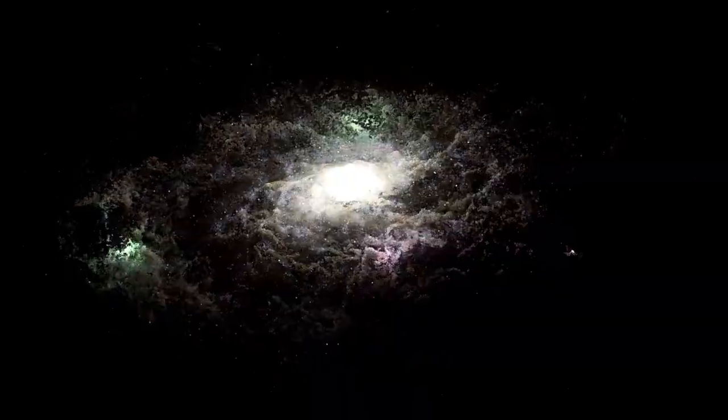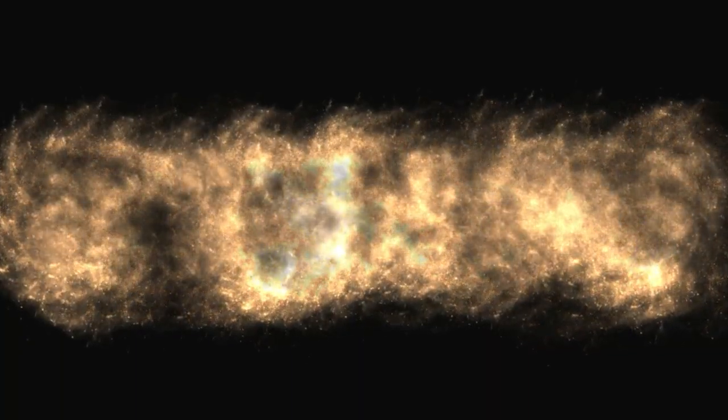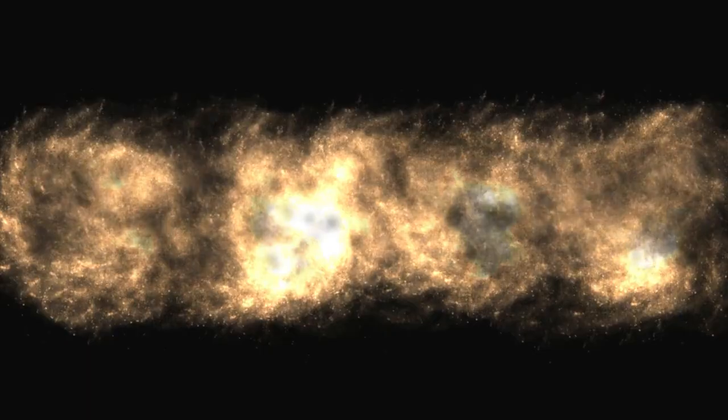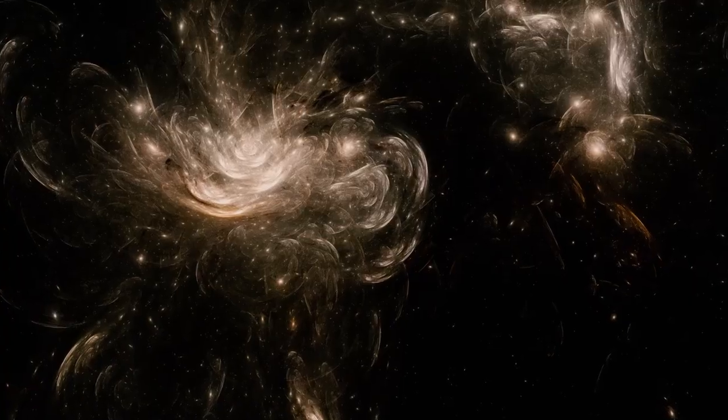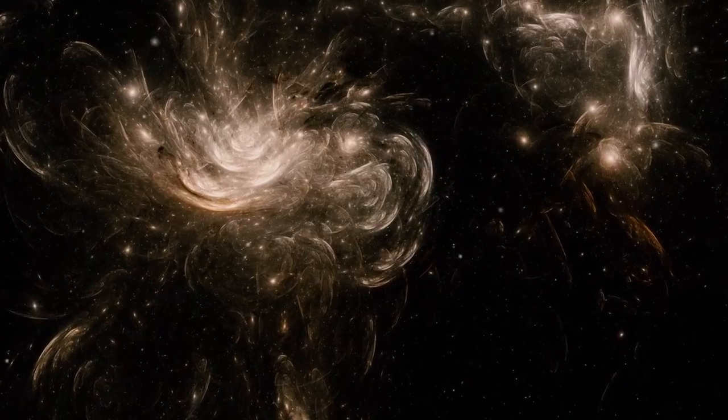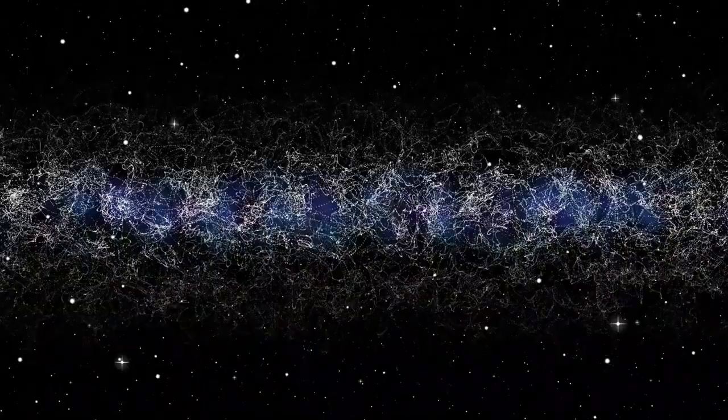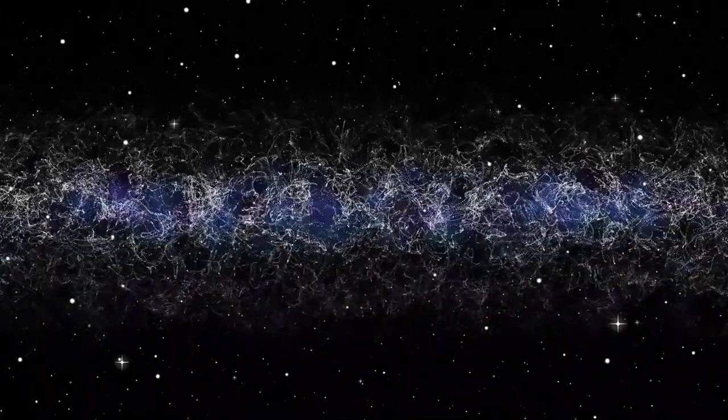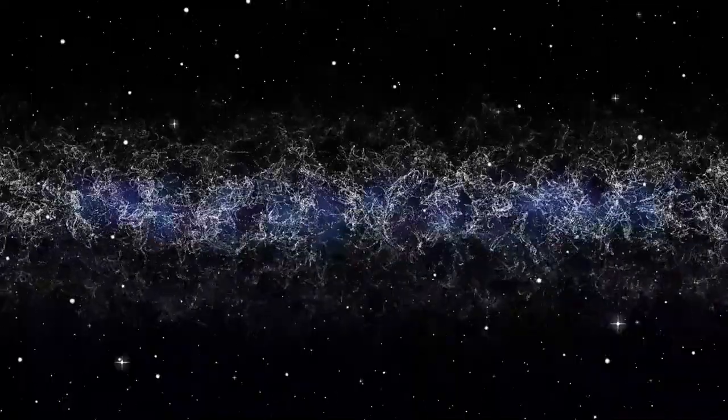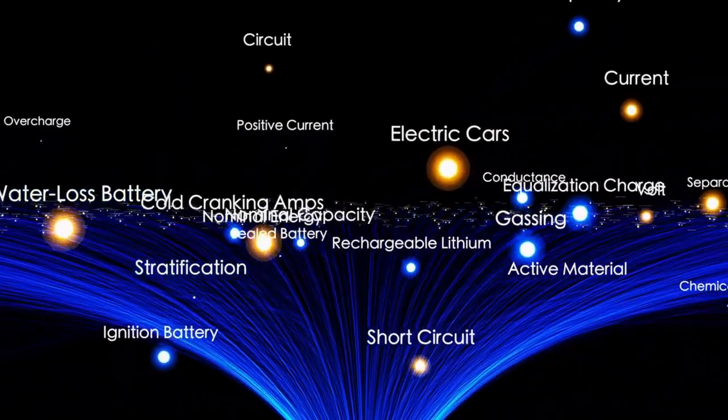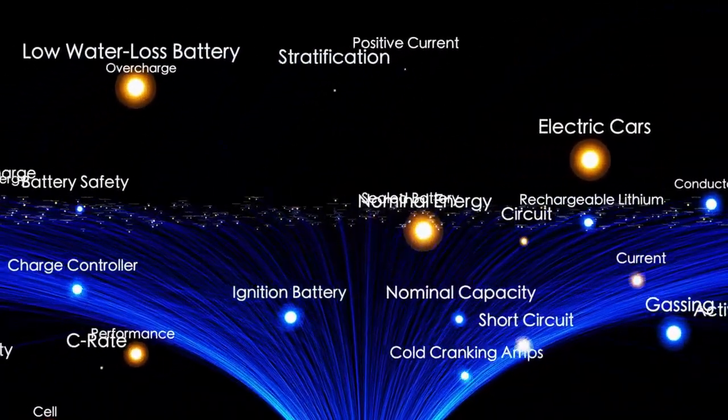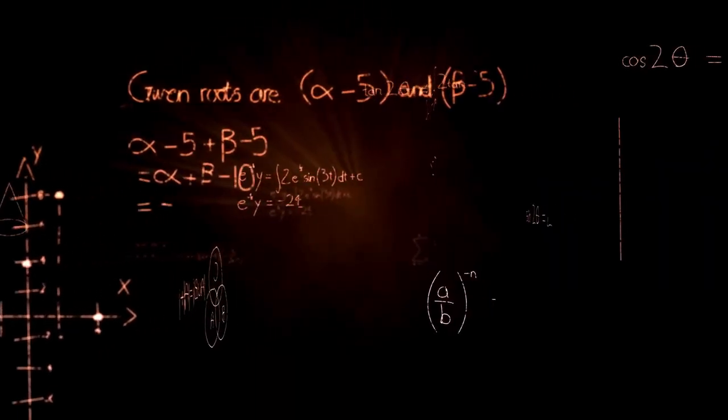However, dark flow remains a controversial topic. Some studies have supported its existence and suggested that a massive object or structure could be causing it. Other studies, though, have not been able to confirm the phenomenon. Some researchers think that the data might be flawed or that the motion of the galaxies could be due to other reasons, such as measurement errors or natural variations. As of now, the scientific community has not reached an agreement on whether dark flow is real. More research and better data are needed to understand this mysterious effect. If dark flow does exist, it could point to something very large and unknown lying beyond the observable universe, something that is pulling on galaxies and affecting their movement.